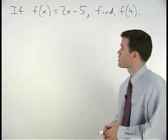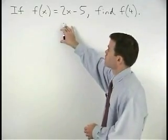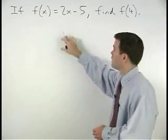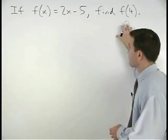Here we're given the function f of x equals 2x minus 5, and we're asked to find f of 4.